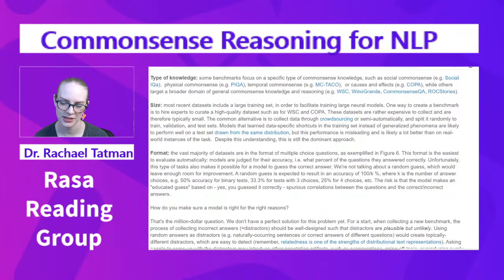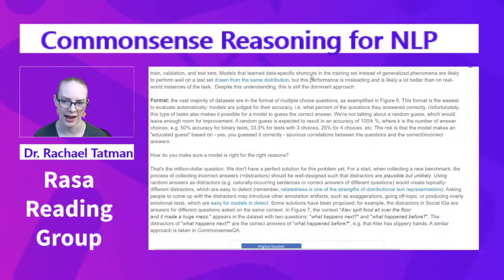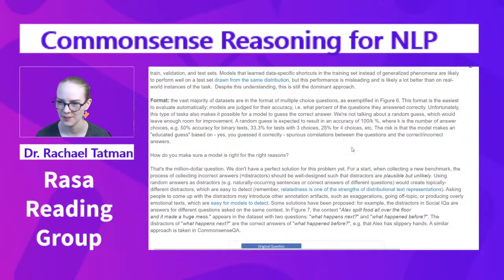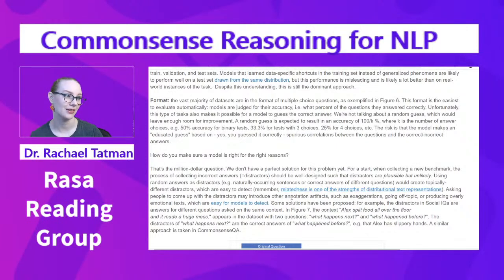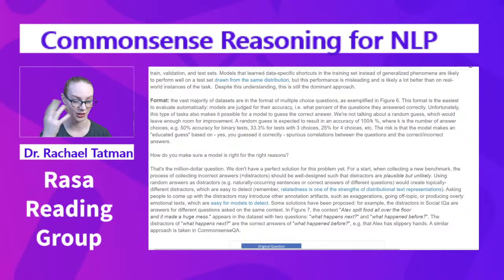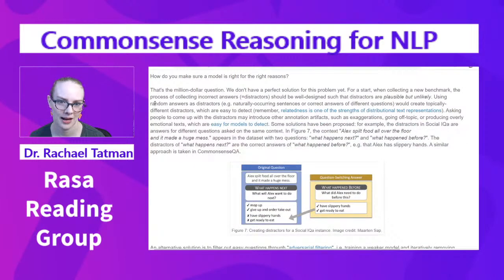The vast majority of datasets are in multiple-choice format, which is easiest to evaluate automatically — models are judged on accuracy. Unfortunately, this format makes it possible for a model to guess correctly. A random guess yields accuracy of 100/k percent, where k is the number of choices — 50% for binary, 33.3% for three choices, 25% for four choices, etc. The real risk is that the model makes an educated guess based on spurious correlations between the question and the correct or incorrect answers, like a student using test-taking strategy rather than genuine knowledge.